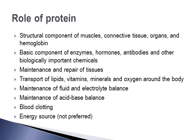Protein helps maintain the acid-base balance of the body — too much acid leads to acidosis, and being too basic leads to alkalosis, both of which have negative health implications. Protein also plays an essential role in blood clotting, and it can serve as an energy source, though this is not preferred. The textbook gives much more detail about each of these roles.